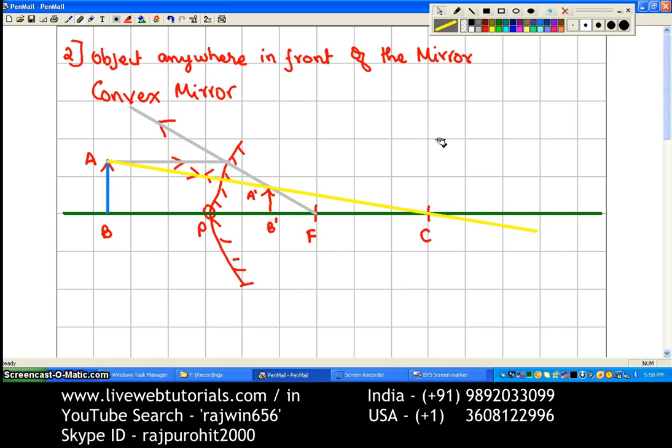Okay, so the size is going to be diminished. And what is the position of the image? The image is between the pole and the focus, that is behind the mirror.